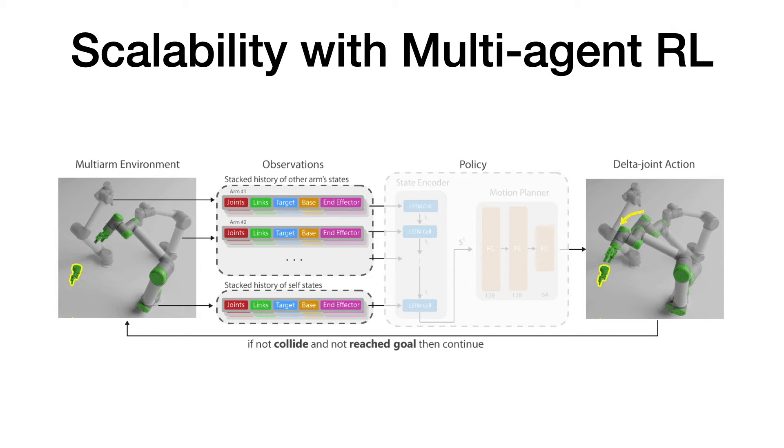We achieve scalability by treating the multi-arm system as a cooperative, homogeneous multi-agent system. A single policy, which observes other arms' states and outputs a closed-loop delta joint action, is shared between all arms, and trained using multi-agent reinforcement learning.